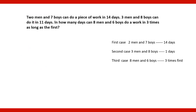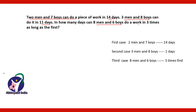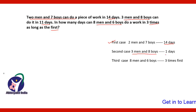Here is the first question: 2 men and 7 boys can do a piece of work in 14 days, whereas 3 men and 8 boys can do it in 11 days. In the first case, 2 men and 7 boys do a work in 14 days, and in the second case, 3 men and 8 boys finish the work in 11 days.